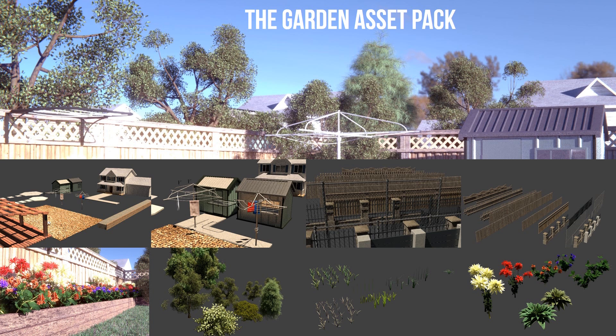The pack contains models for fences of all types, including wooden, metal, concrete and so on. You will also get a pack for the grass, trees, flowers, plants and backyard props, such as the clothesline and the garden shed.